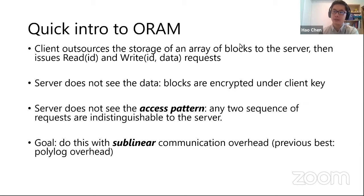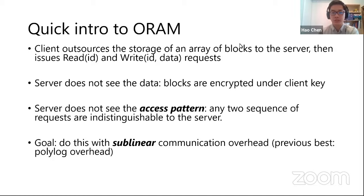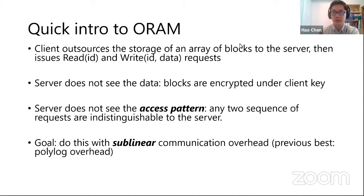The important privacy guarantee is: first, the server doesn't see the data — all data are encrypted under the client's secret key. Second, we also want to protect the client's read and write patterns. This is formalized by saying that any two sequences of requests look indistinguishable to the server — for example, the server doesn't know which block the client is reading. The goal of ORAM is to achieve these guarantees with a sublinear communication overhead. Previous work without HE achieves polylogarithmic overhead.